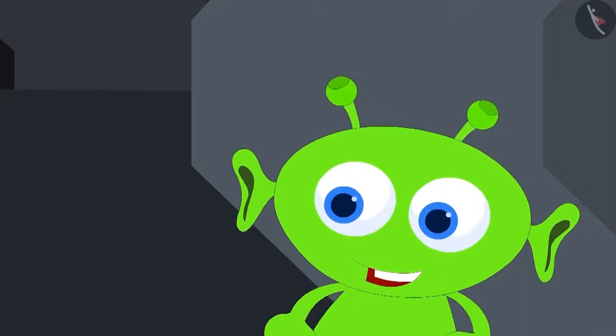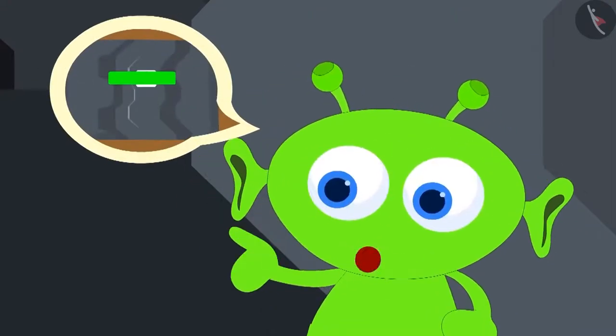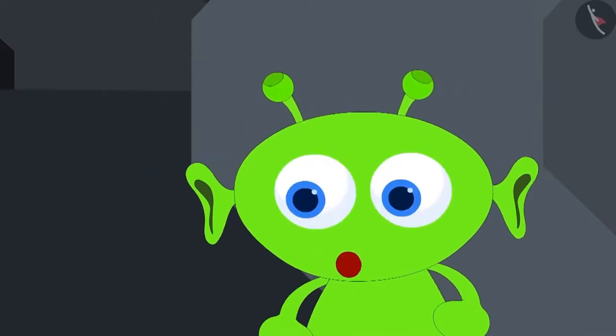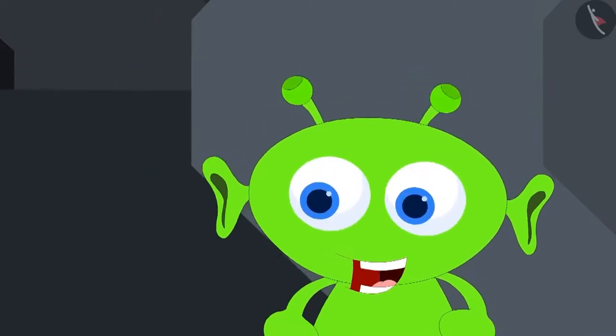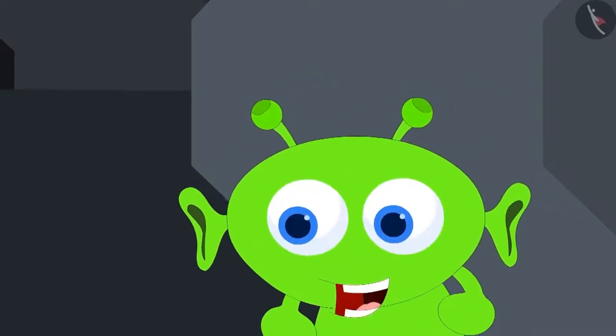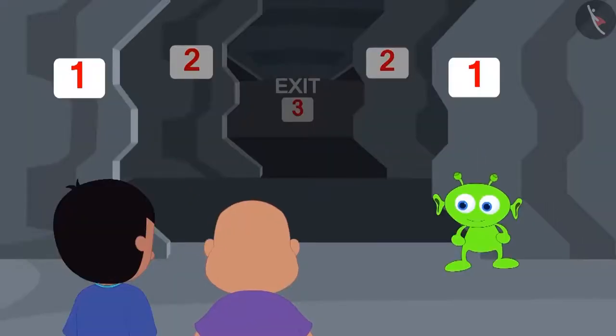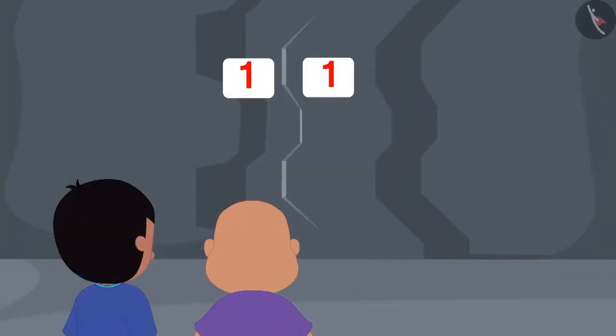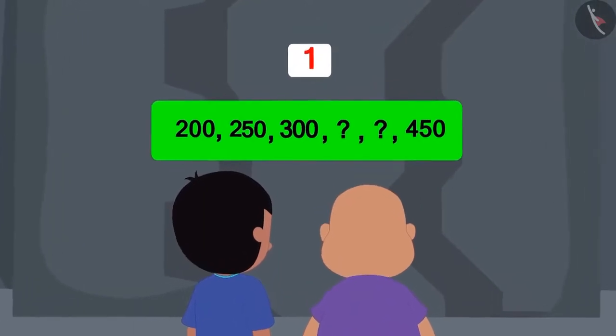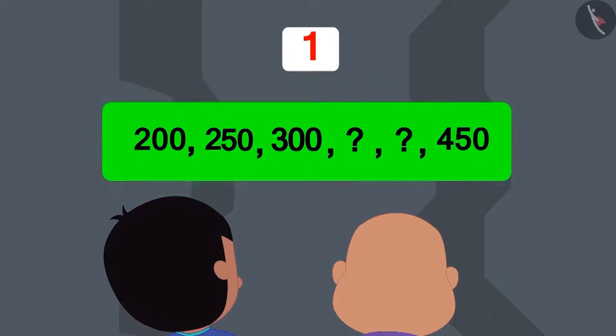There is just one way to get out of this spaceship. This spaceship has three doors. Each door has a code on it. If you can correctly solve the codes on all the three doors, only then you will be able to go back. Ha, ha, ha, ha! Jeev said this and disappeared.